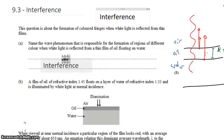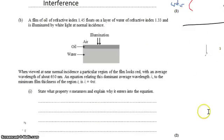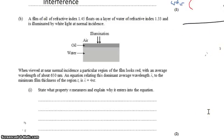It's interference, thin film interference. All right, so moving on to part B. A film of oil with refractive index 1.45 floats on a layer of water with refractive index 1.33, and it's illuminated by white light normal to the surface. When viewed from near-normal incidence, the film looks red with an average wavelength of 650 nanometers. An equation we might use to relate the dominant average wavelength to the minimum film thickness is this.